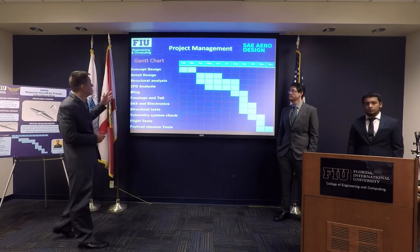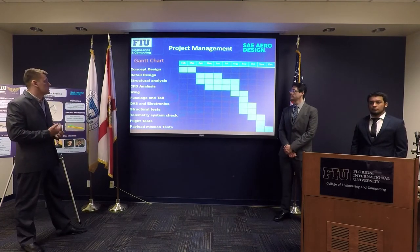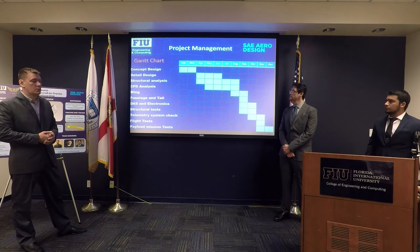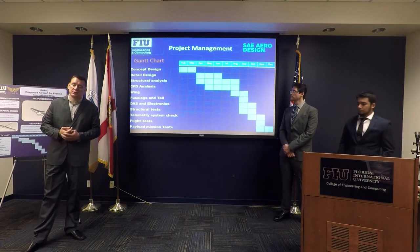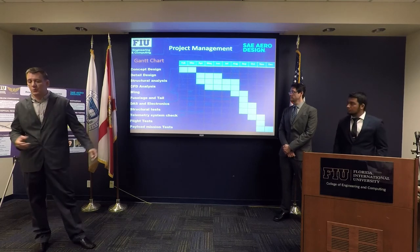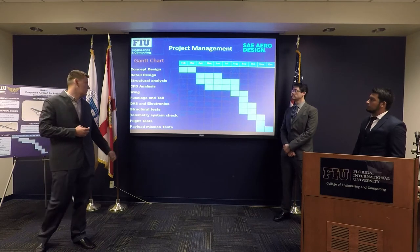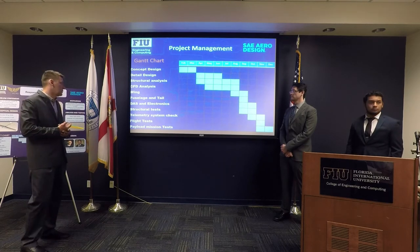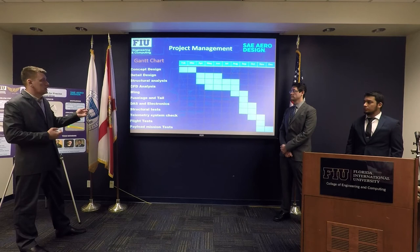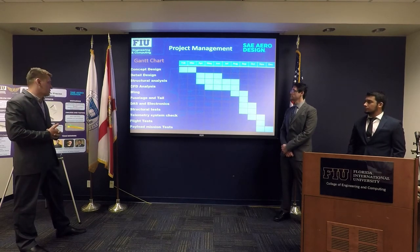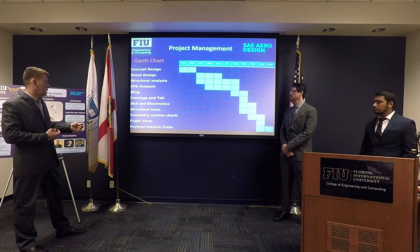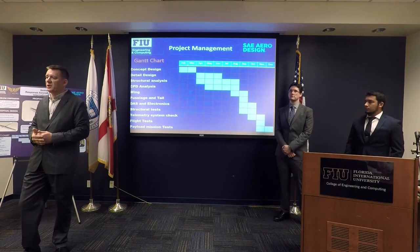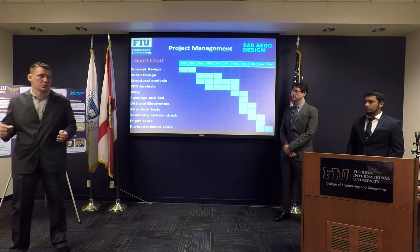For project management, we have a Gantt chart. In March and February we did the concept design. Currently we're working on the detail design, structural analysis, and we already started the CFD analysis. We would like to finish everything over the summer to start building the actual aircraft in August, starting from the wing, which is the most critical part. In September and October we'll finish the fuselage and tail and install the electronics and data acquisition equipment. Structural tests are planned for October to compare with the structural analysis predictions. Flight tests will be in November, and the payload mission test in December. The competition itself will be held in April 2018, so we have time to adjust the design.